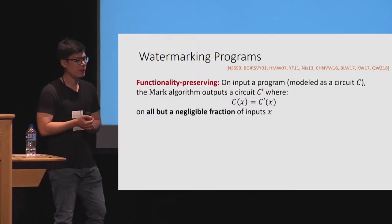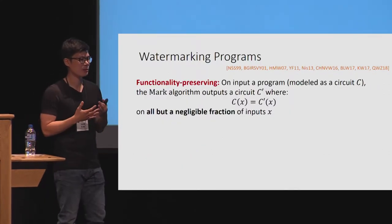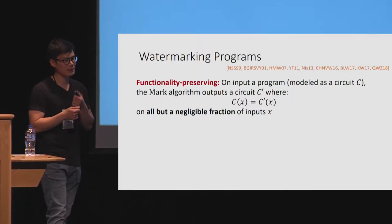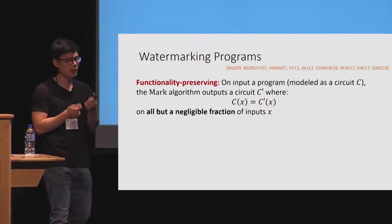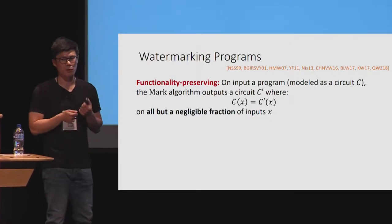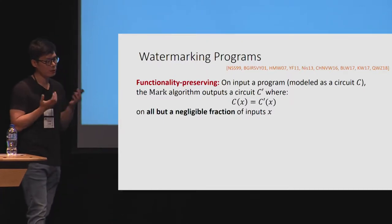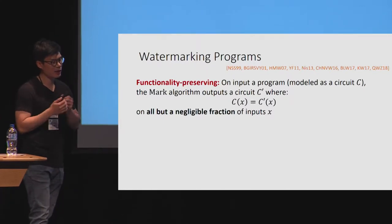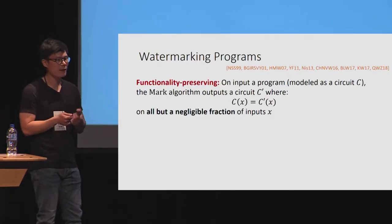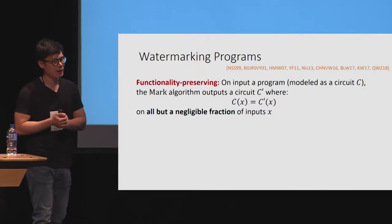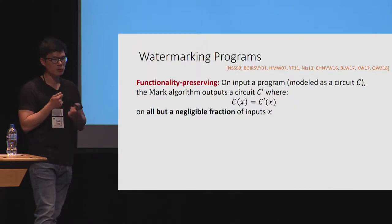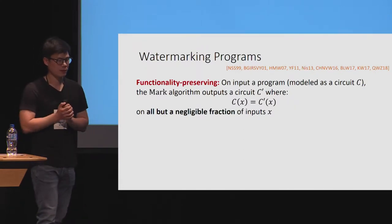The first property is functionality-preserving, which basically says that the marked circuit output by the marking algorithm should behave essentially like the original program. We require that the input and output behavior of the marked and unmarked circuits be the same on all but a negligible fraction of the inputs in the domain.